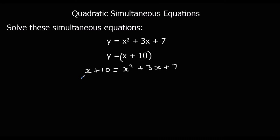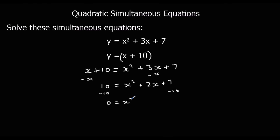I'm going to minus x from both sides, giving me 10 equals x squared plus 2x plus 7, then minus 10 from both sides. So that gives me x squared plus 2x minus 3 equals 0. The easiest way to solve a quadratic is to factorize it, so let's put it into two brackets.